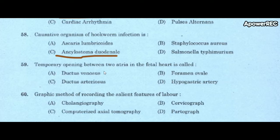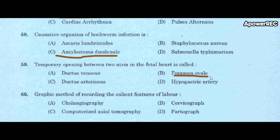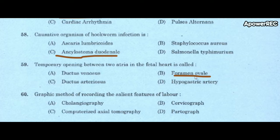Next question: temporary opening between two atria in the fetal heart is called A) ductus venosus, B) foramen ovale, C) ductus arteriosus, D) hypogastric artery. Correct answer is foramen ovale. The temporary opening between two atria in the fetal heart is called foramen ovale.